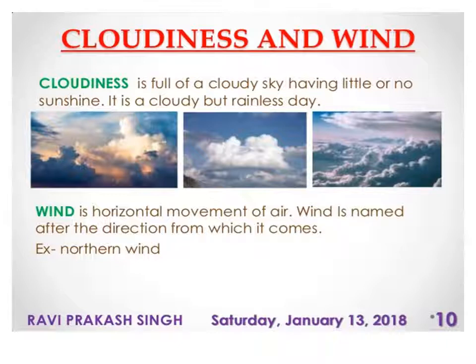Cloudiness refers to a fully cloudy sky having little or no sunshine. A cloudy but rainless day is known as cloudiness. Wind is a horizontal movement of air. It is named after the direction from which it comes. For example, a wind coming from the north is known as a northern wind.